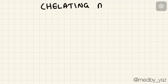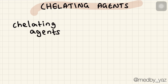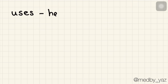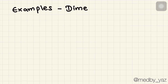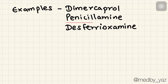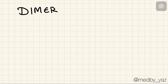Today we're going to learn about the pharmacology of chelating agents. They are drugs which complex with a metallic ion and form a ring structure within their molecule, making them very useful in heavy metal poisonings. Examples of chelating agents are dimercaprol, penicillamine, and desferrioxamine. Let's dedicate two minutes for each drug and study those in detail.